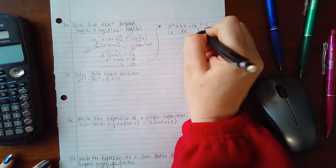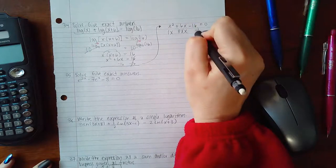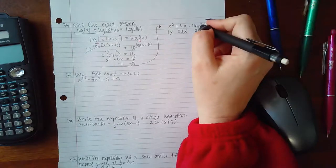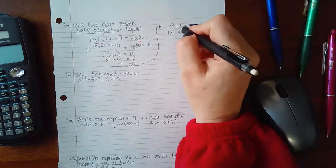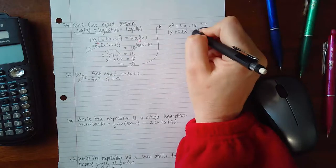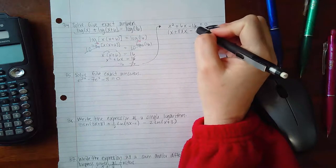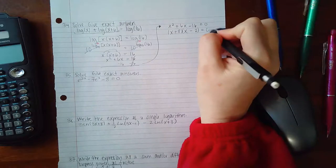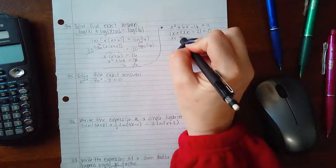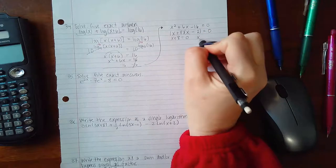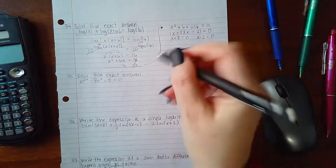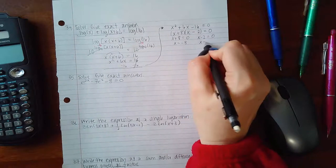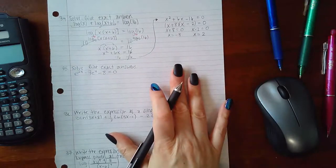I will use 8 and 2 since those subtract to give me 6 and multiply to give me negative 16. The bigger number has to be positive. Let's verify: 8 times negative 2 is negative 16, 8 minus 2 is positive 6. So that's factored correctly. Setting each factor equal to zero, we get x equals negative 8 and x equals positive 2.